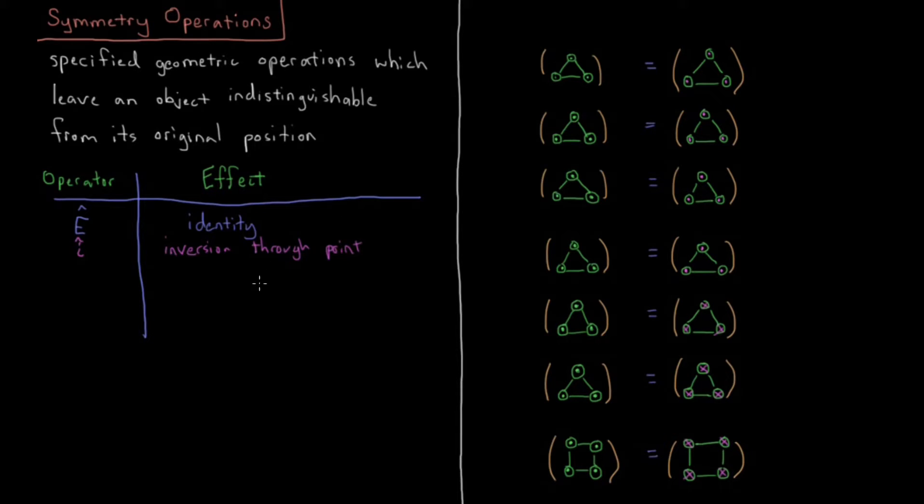This is a chemistry playlist. The effect of inversion is if you have something with Cartesian coordinates X, Y, Z, and you invert it through the origin, what you'll end up with is minus X minus Y minus Z. So it is inverted through the origin. We'll see this in a second in practice.